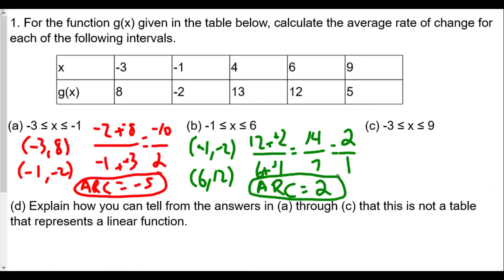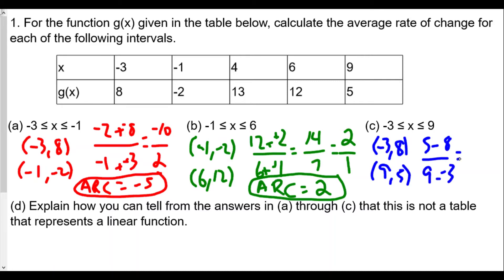We see that different average rates of change, or different slopes, appear between different pairs of points. For the third interval, x equals negative 3 gives y equals 8, and x equals 9 gives g(x) equals 5. So the slope is 5 minus 8 over 9 minus negative 3, which is negative 3 over 12. The average rate of change simplifies to negative one-fourth.